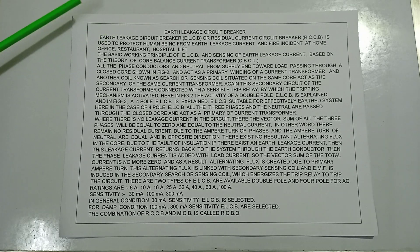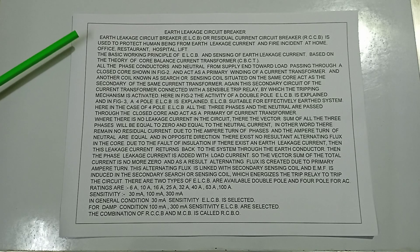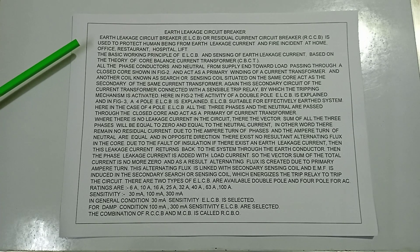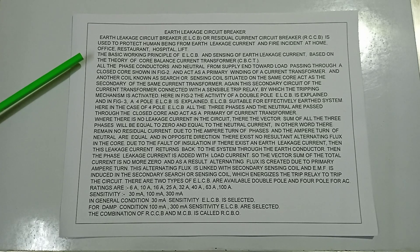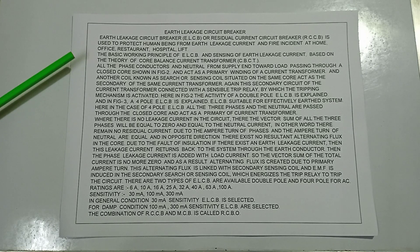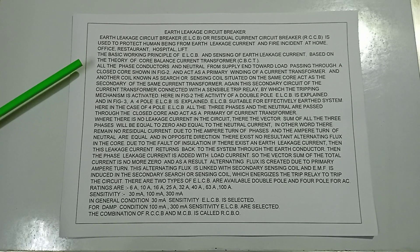Earth leakage circuit breaker (ELCB), also called residual current circuit breaker (RCCB), is used to protect human beings from earth leakage current and fire incidents at homes, offices, restaurants, and hospitals. The basic working principle of ELCB involves sensing of earth leakage current based on the theory of the core balance current transformer (CBCT).